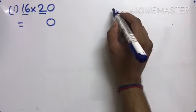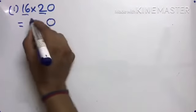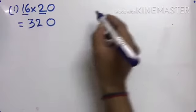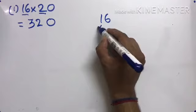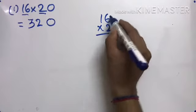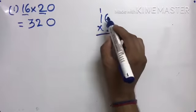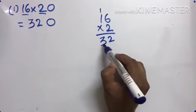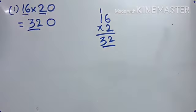Now we have 16 and 2 remaining. If you know the table, 16 times 2, that's fine. If the table is not known, then simply multiply: 2 times 6 is 12, carry 1. 2 times 1 is 2 plus 1 is 3. This is the answer here. Understood?